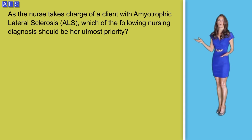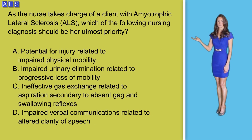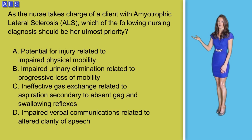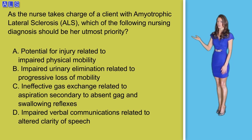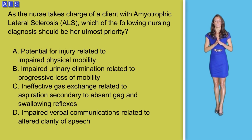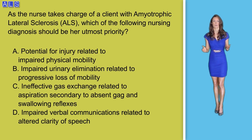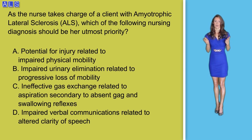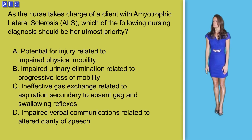Question number two: as a nurse takes charge of a client with ALS, which of the following nursing diagnoses should be her utmost priority? A) potential for injury related to impaired physical mobility; B) impaired urinary elimination related to progressive loss of mobility; C) ineffective gas exchange related to aspiration secondary to absent gag and swallowing reflexes; or D) impaired verbal communication related to altered clarity of speech. Oxygenation and air exchange is the priority for clients with ALS whose gag and swallowing reflexes have been affected, making the best answer option C.